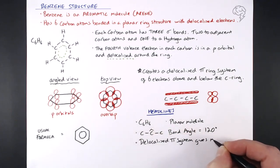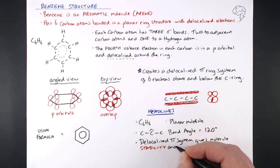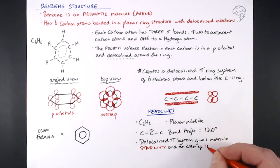So we've got our delocalized pi system. That gives the molecule two things. The first is stability. It is a very, very stable molecule. More on that in a second. But also it gives an area of high electron density. So things that are attracted to a negative area are going to attack this benzene ring. In other words, electrophiles.